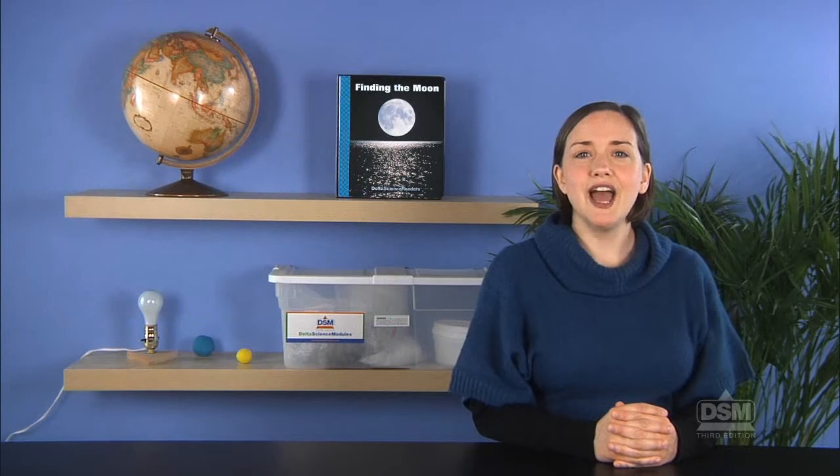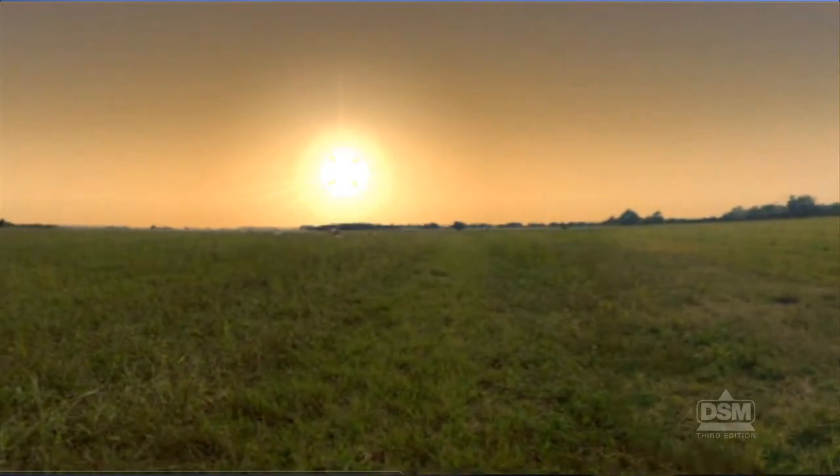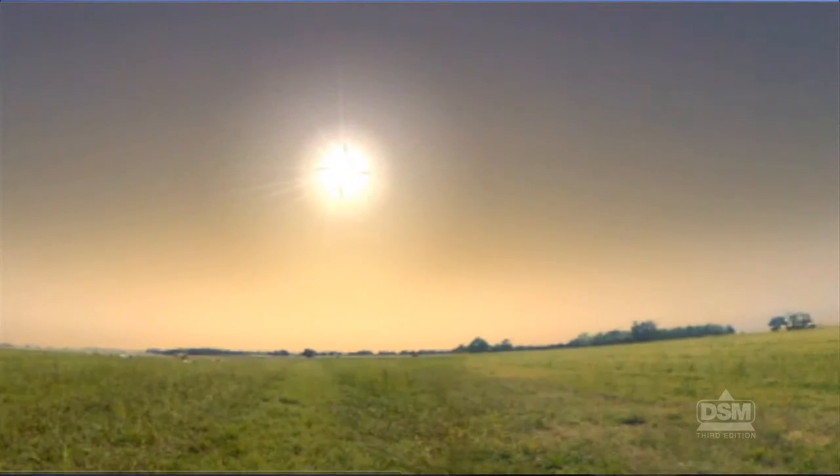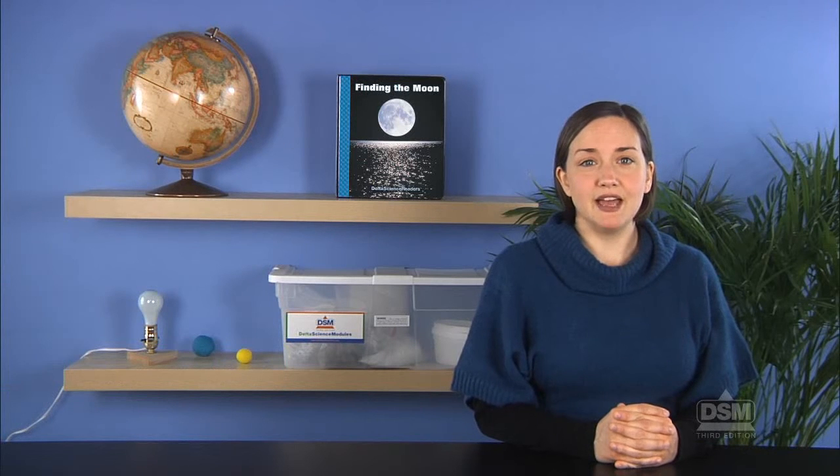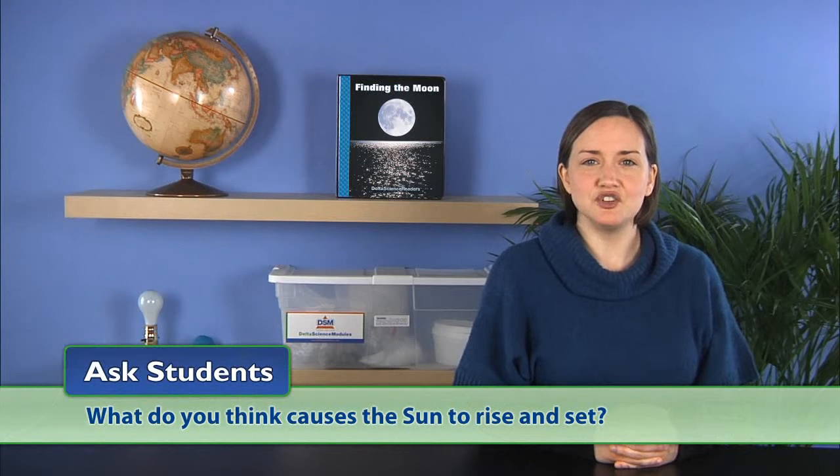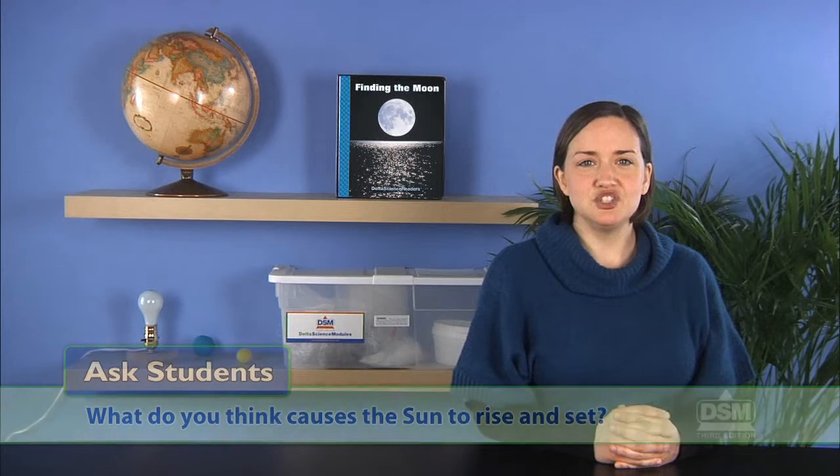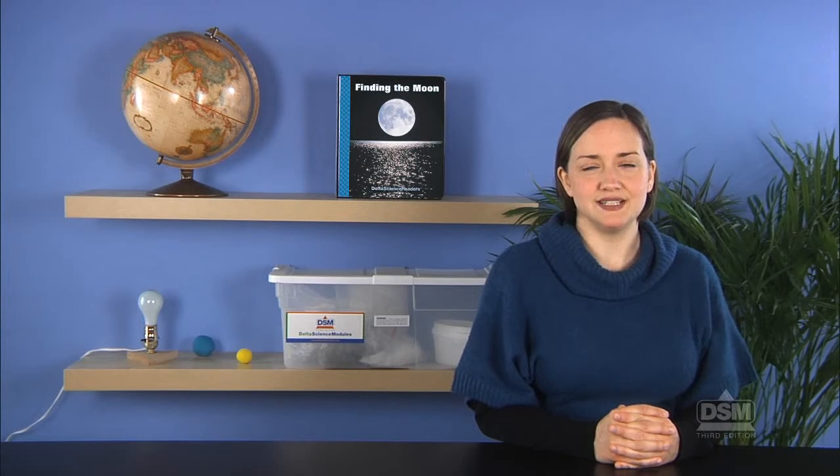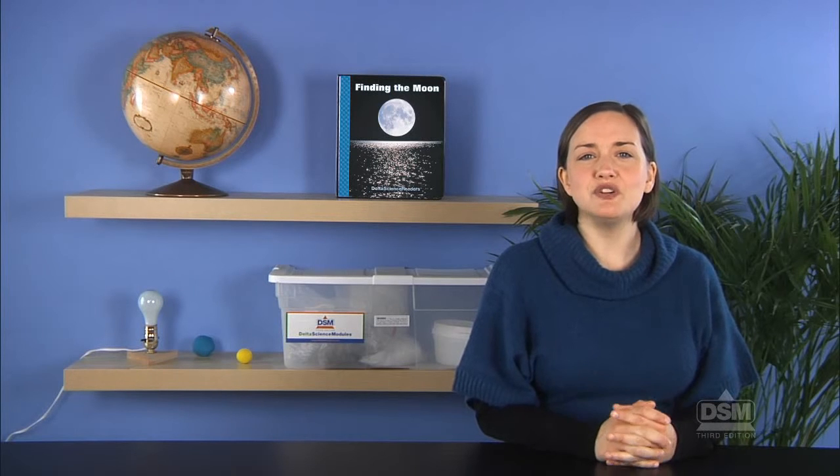Next, have students think about what happens to the sun during the day. They probably have observed that it appears to move across the sky. Then ask students: Where is the sun at night? Students may say that the sun goes down at night. Ask: What do you think causes the sun to rise and set? Students will probably reply that the sun moving around Earth causes it to rise and set. Accept all reasonable answers.